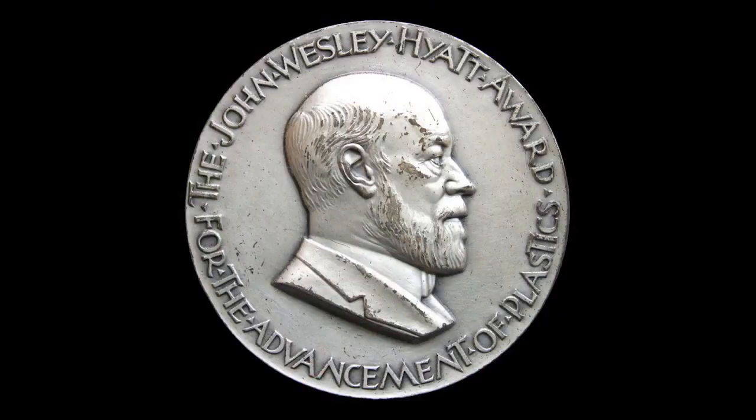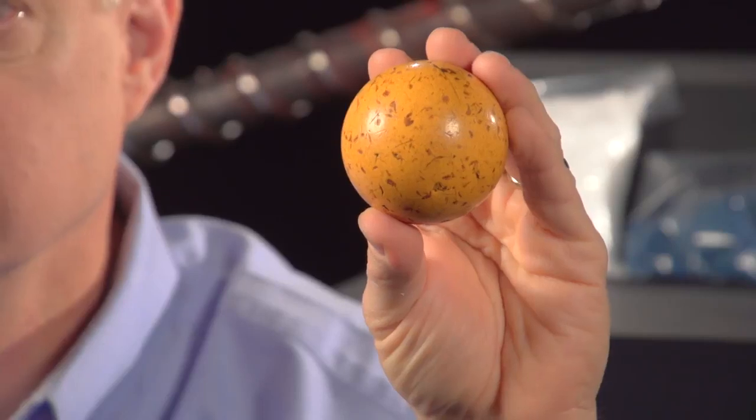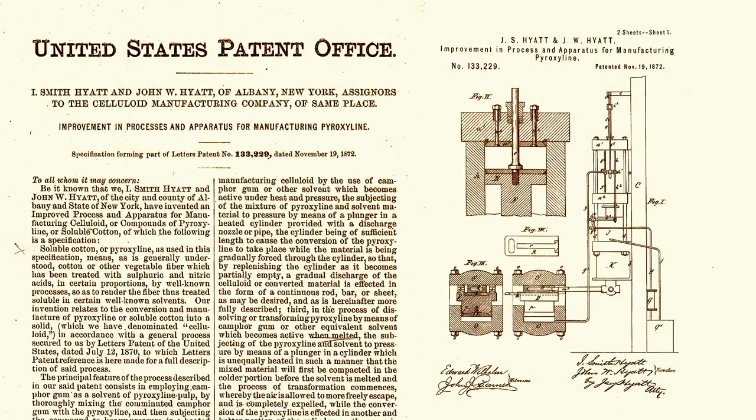And this spurred John Wesley Hyatt to develop one of the first plastics, celluloid, to create billiard balls. He patented an apparatus for molding products from celluloid. This apparatus was the birth of plastic injection molding.